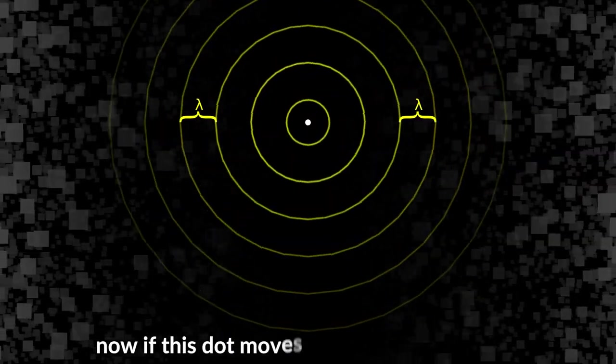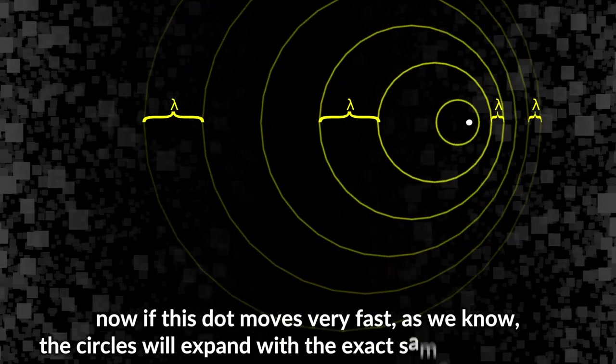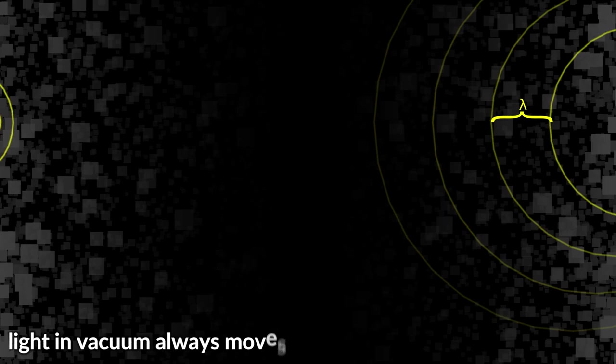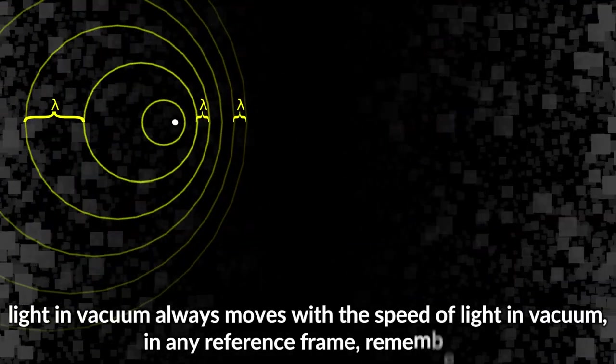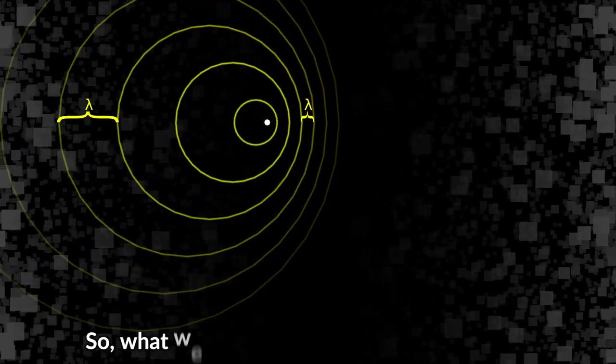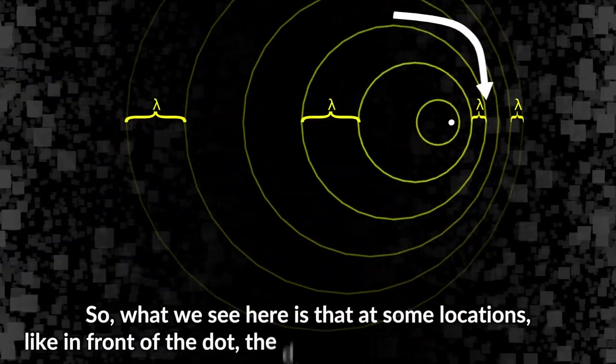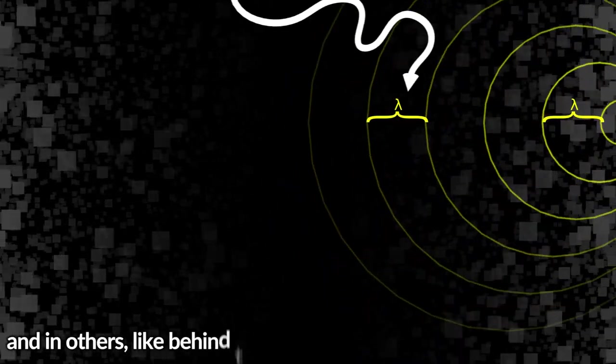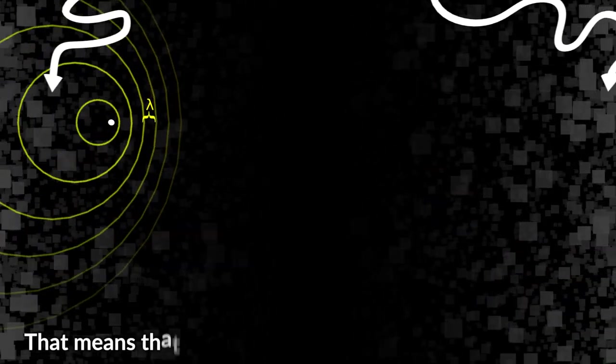Now if this dot moves very fast, as we know the circles will expand with the exact same speed for us static observers watching this dot. Light in vacuum always moves with the speed of light in vacuum in any reference frame, remember? So what we see here is that at some locations, like in front of the dot, the distance between circles shrinks, and in others, like behind the dot, distance between circles expands.